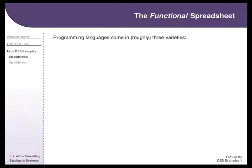So far we've been talking about hand simulation. Now we'll move into using computational tools. Before learning something like Arena, we'll start with something simpler. You'll do spreadsheet activities today, and lab three will involve Monte Carlo simulations using a spreadsheet. In lab four, you'll use an agent-based modeling tool. We'll discuss agent-based modeling at the end of Unit C, then get into Arena for the rest of the course.